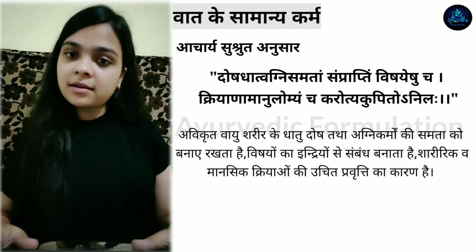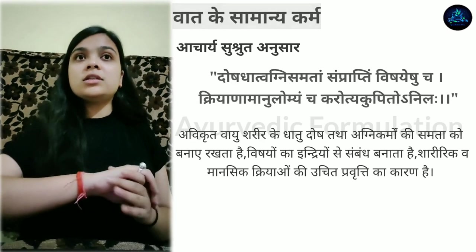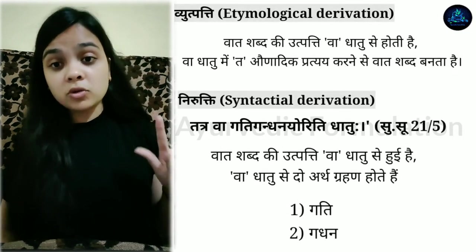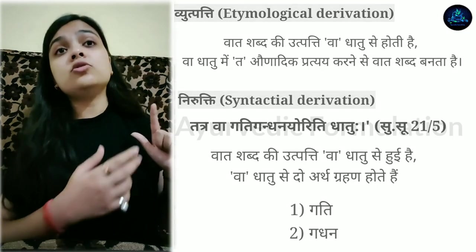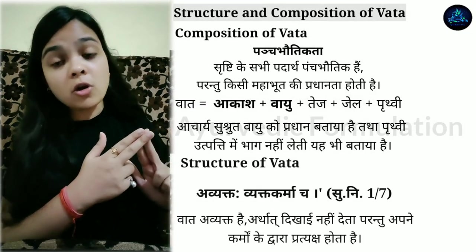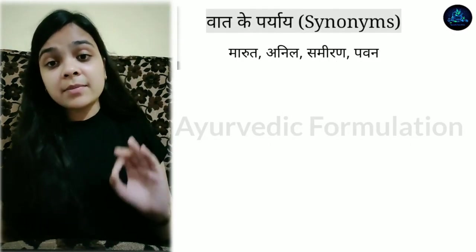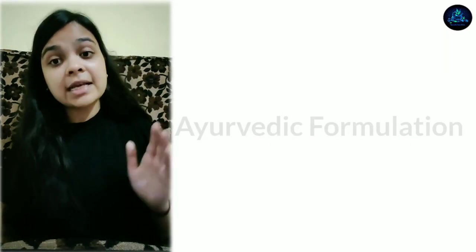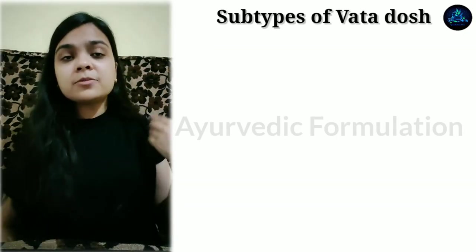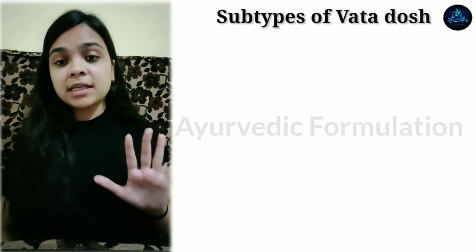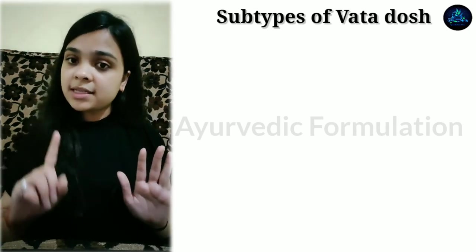So this was the general introduction to Vat. We have seen Vyutpatti, Nirukti, then structure and composition, general properties, general locations, and general functions of Vat Dosh. Now there are five subtypes of Vat which are mentioned in Charak Samhita.